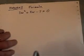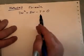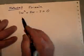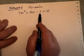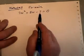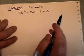Method number three: formula. The formula is used when you have a question like this which cannot be factored. 3 times 7 is 21. There's nothing that multiplies to make 21 and subtracts to make 5, so it cannot be factored.